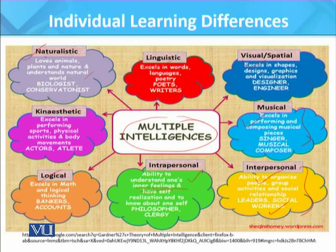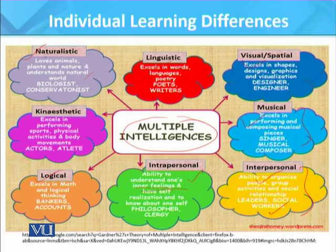Logical-mathematical intelligence, according to Gardner, is the ability to study problems or carry out mathematical operations logically and analytically. People with this ability develop problem-solving skills mathematically. Activities associated with this intelligence include watching TV shows about science, visiting a local science museum, sequencing events into a storyline, and using technology such as calculators and games.